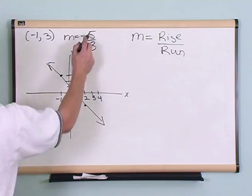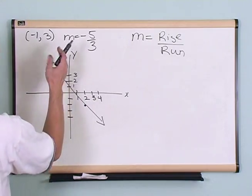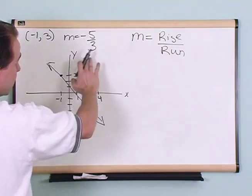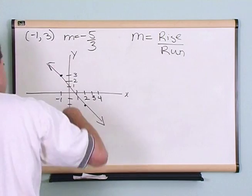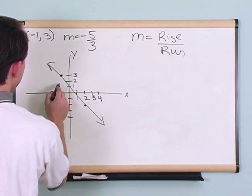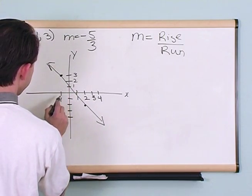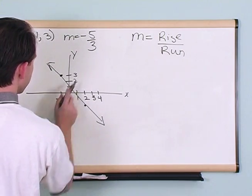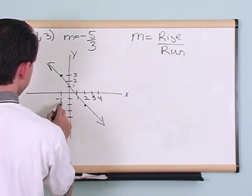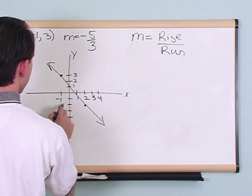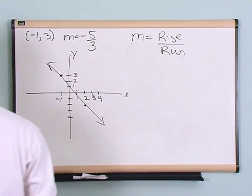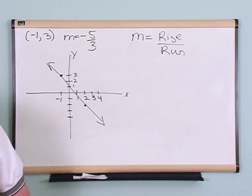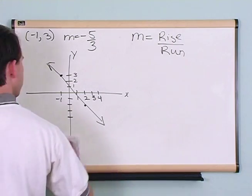You have your starting point, and you go down 5 because you're rising a negative 5 — so instead of rising, you go down 5 units, then over to the right positive 3 units. Easy enough. That's how you graph a line with a negative fractional slope.